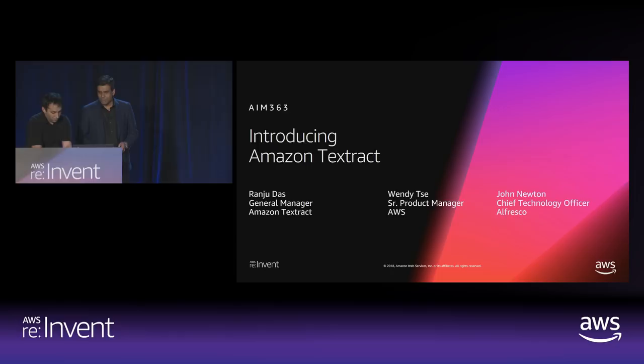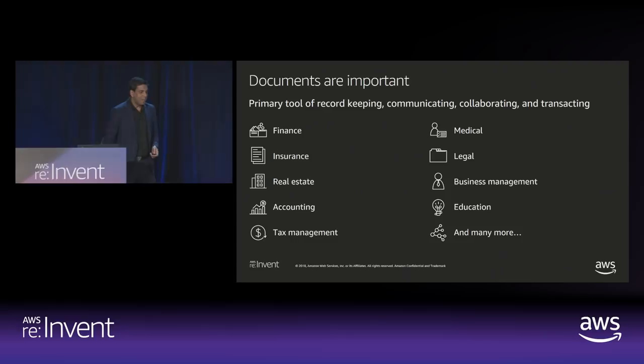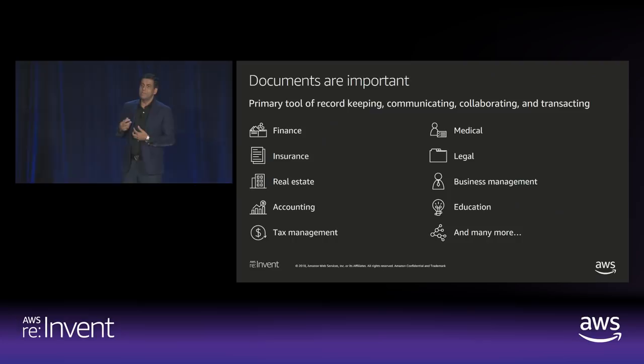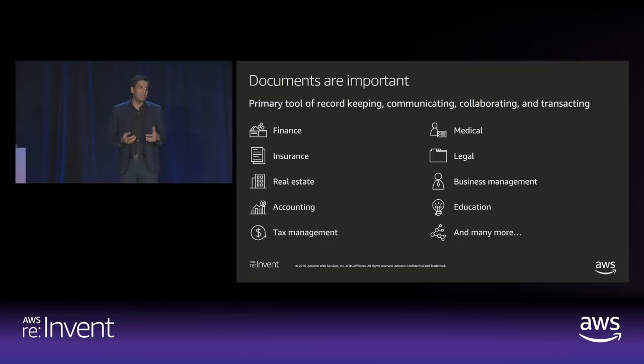We're going to talk about Amazon Textract today. It's part of the computer vision solution and the AI services stack. The objective of AI services has always been to take really hard problems — where otherwise you'd have to collect data, experiment with models, train and iterate — and abstract all that non-differentiated heavy lifting, so you can focus on what grows your business and makes your customers happier.